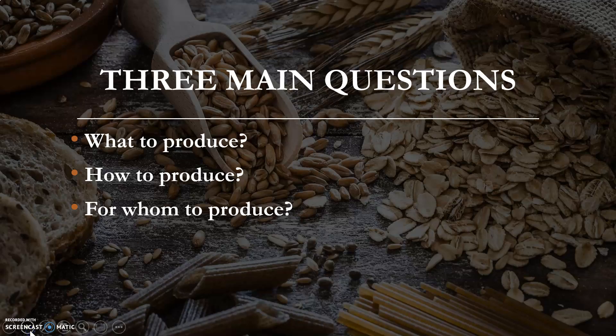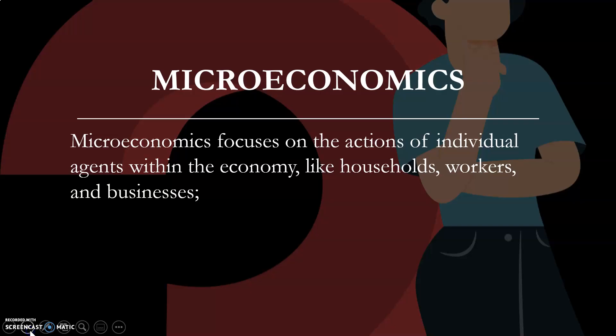These three things are the main questions asked or answered by economics: what to produce, how to produce, and for whom to produce.